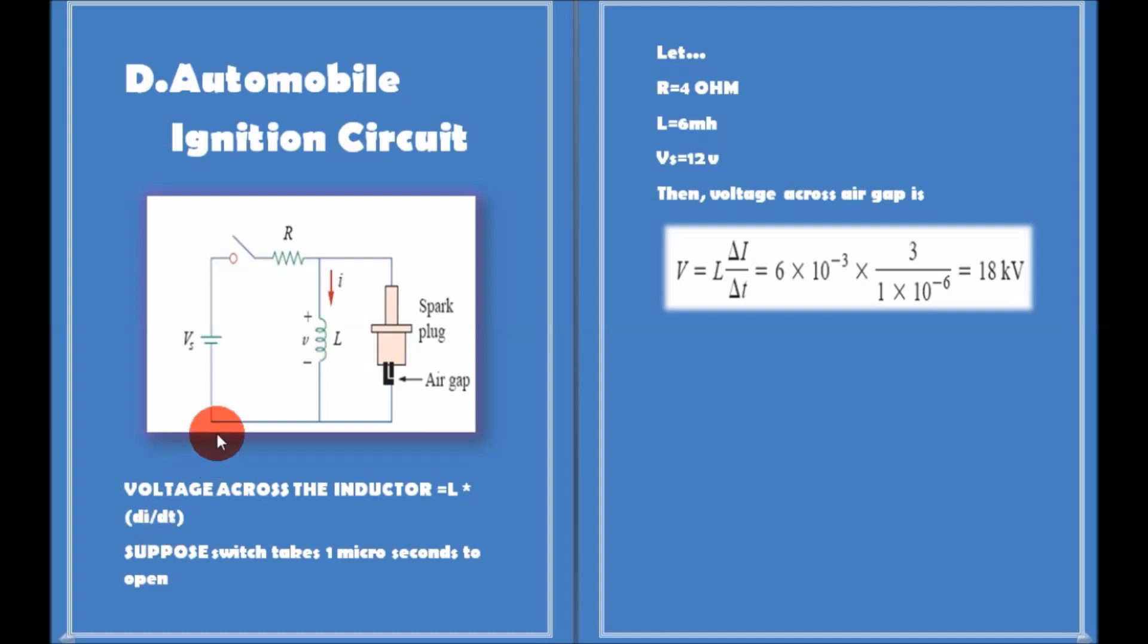When the ignition switch is closed, the current through the inductor increases gradually and reaches a steady state. At steady state, I is constant and the inductor voltage V is zero.